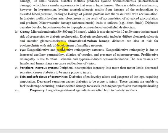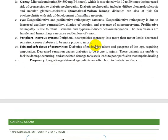Regarding the eye, there is a retinopathy due to microvascular changes — glycosylation and accumulation of sorbitol — reducing the lumen size of the retinal artery. You can have non-proliferative retinopathy, which is due to increased capillary permeability, dilation of vessels, and microaneurysms, and proliferative retinopathy, which is due to retinal ischemia causing neovascularization.